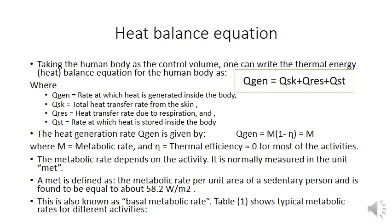The heat balance equation accounts for all types of heat transfer in the human body. Q_sk is the total heat transfer rate from the skin; Q_res is the heat transfer rate due to respiration; and Q_st is the rate at which heat is stored inside the body. Combining all three gives the total heat generated — Q_gen. This is derived by taking the human body as a control volume and is known as the thermal heat balance equation.